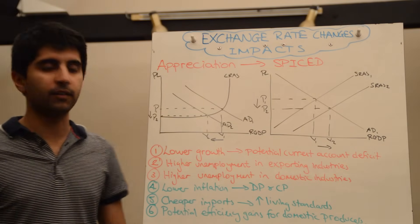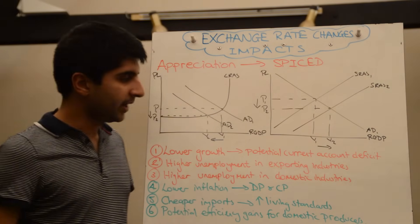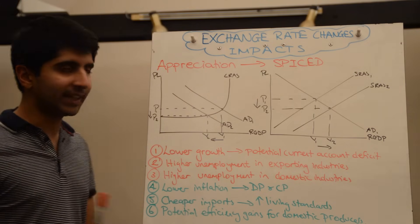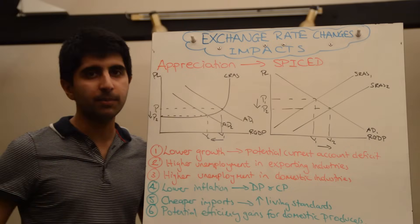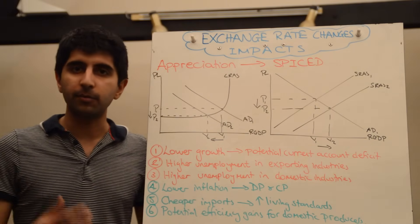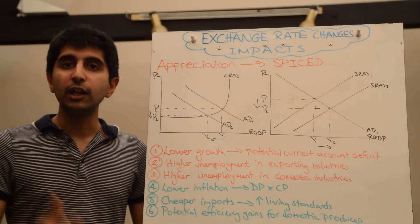Which can improve their happiness, improve their material standards of living. And the potential here is for domestic producers to gain potentially from efficiency benefits. Now having to compete with cheaper imports, these domestic firms may well look to cut costs elsewhere.